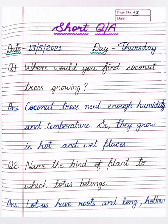Our first question is: where would you find coconut trees growing? Coconut trees need enough humidity and temperature. Coconut trees ko grow hone ke liye enough moisture aur enough temperature ki zarurat hoti hai. So they grow in hot and wet places.